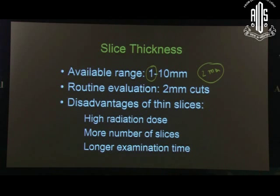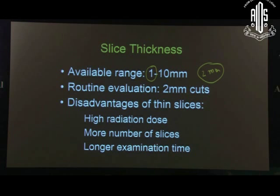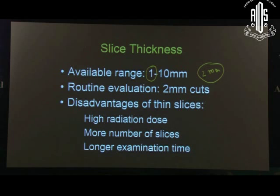In older generation CT scans, the problem was radiation exposure because lower slice thickness meant longer imaging time. But with spiral CT scan, the acquisition is the same irrespective of slice thickness — it is all reconstruction. So you can ask for thinner sections, even 0.5 mm or 1 mm for optic pathway pathologies. Generally for orbit, 2 mm is what is done.